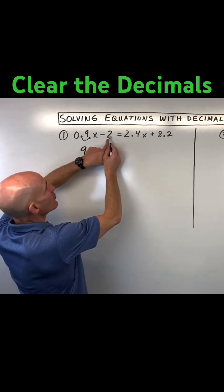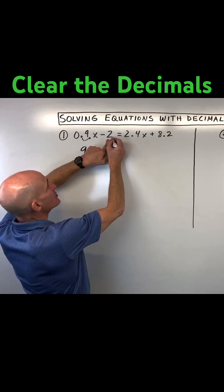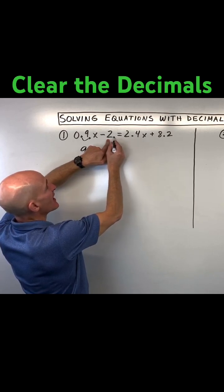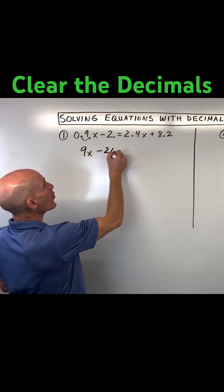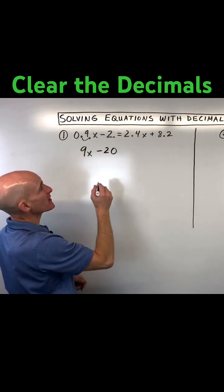You also want to make sure you multiply the 2 by 10. You don't see the decimal, that means it's understood to be right here on the right side. So if I move that one place to the right, this is actually going to make this 20, because I have to put a 0 as a placeholder.